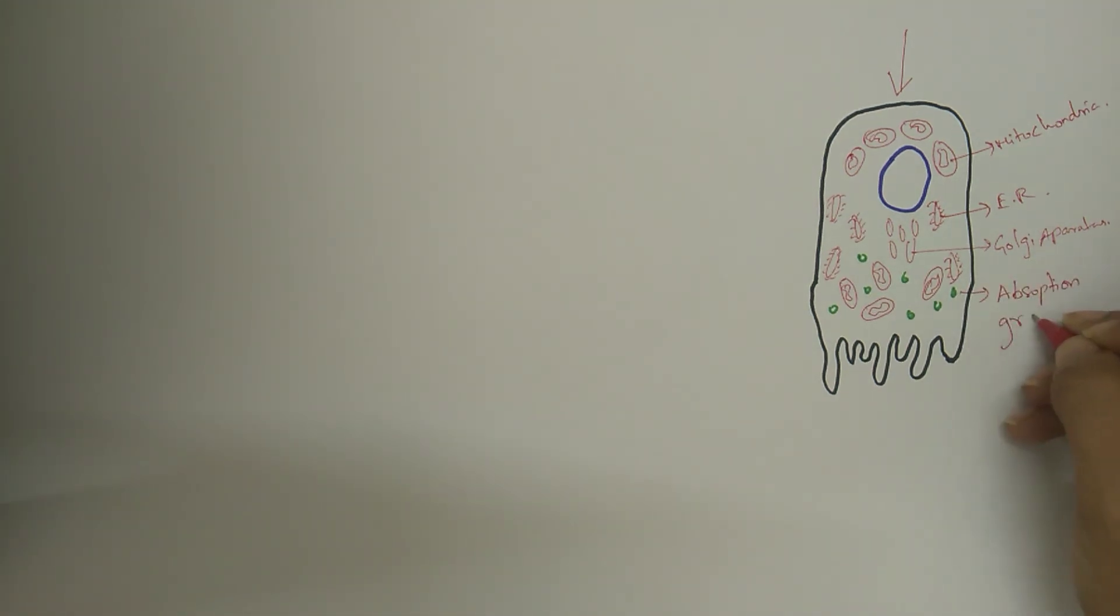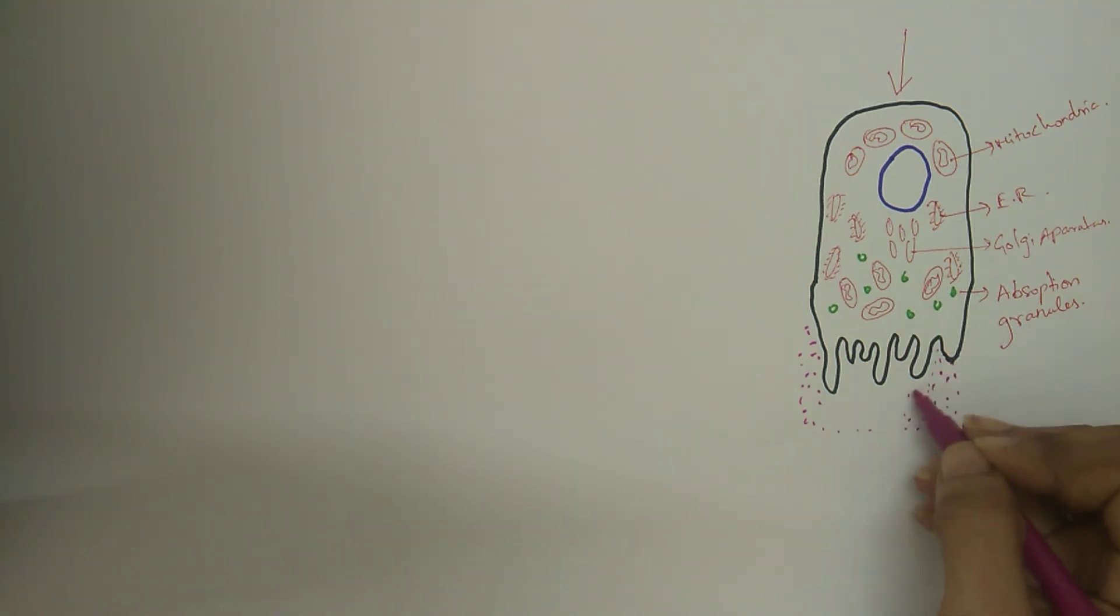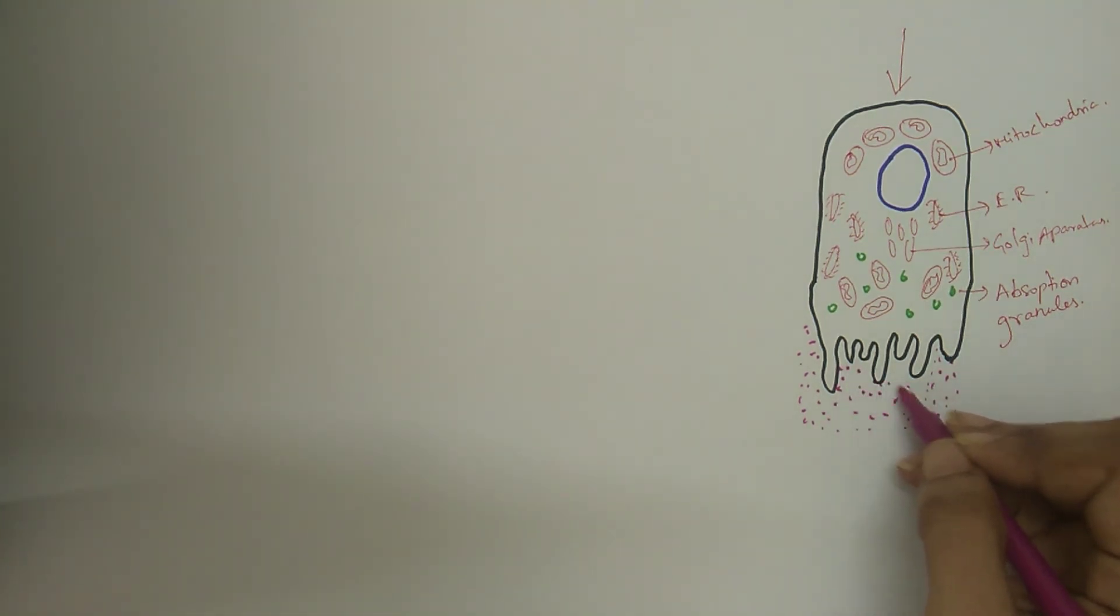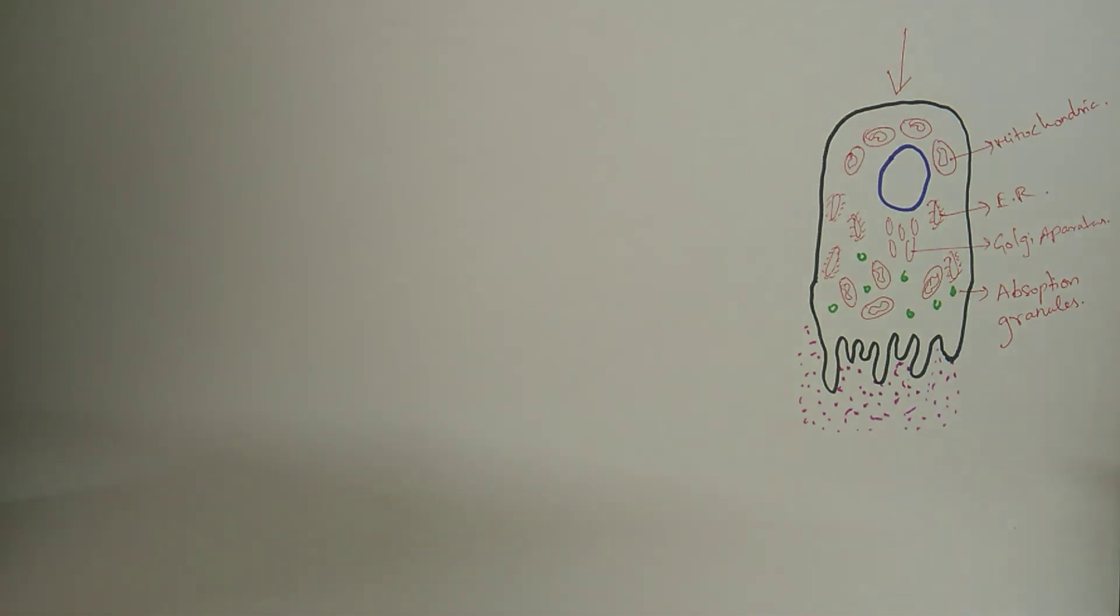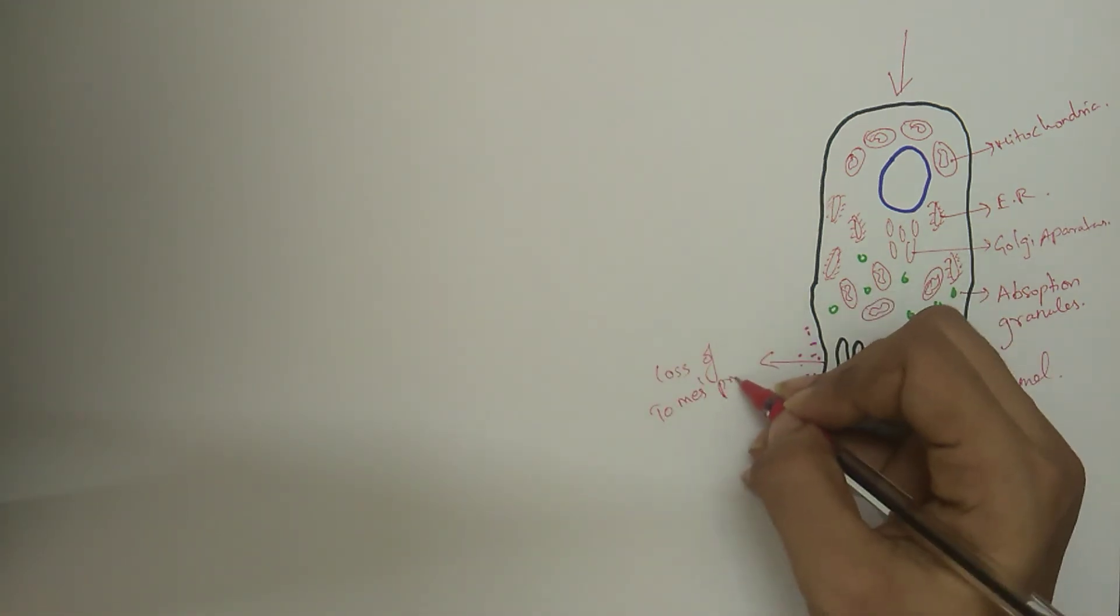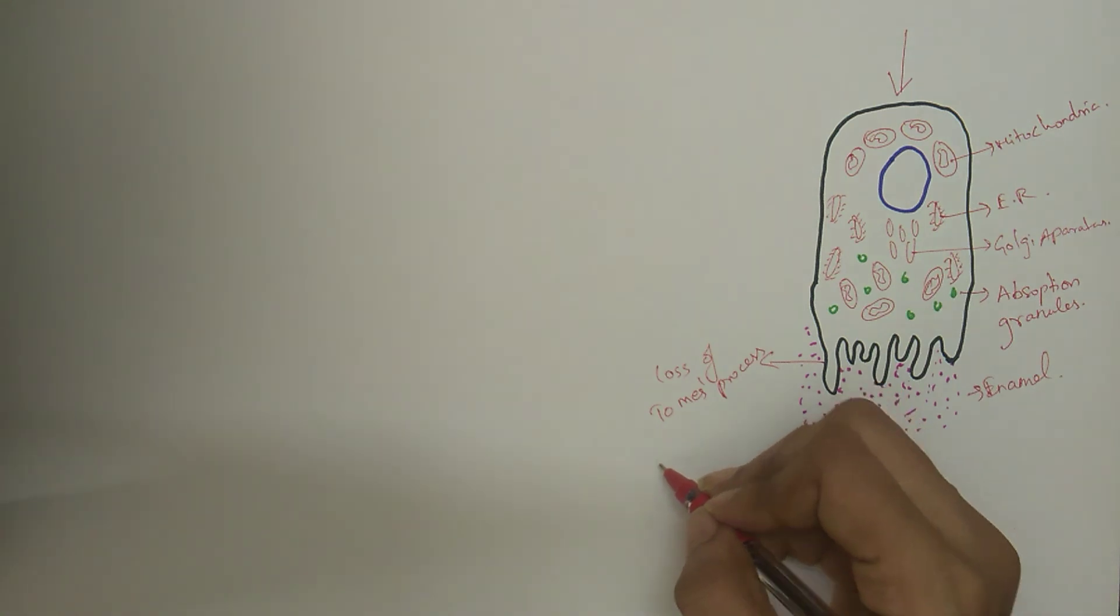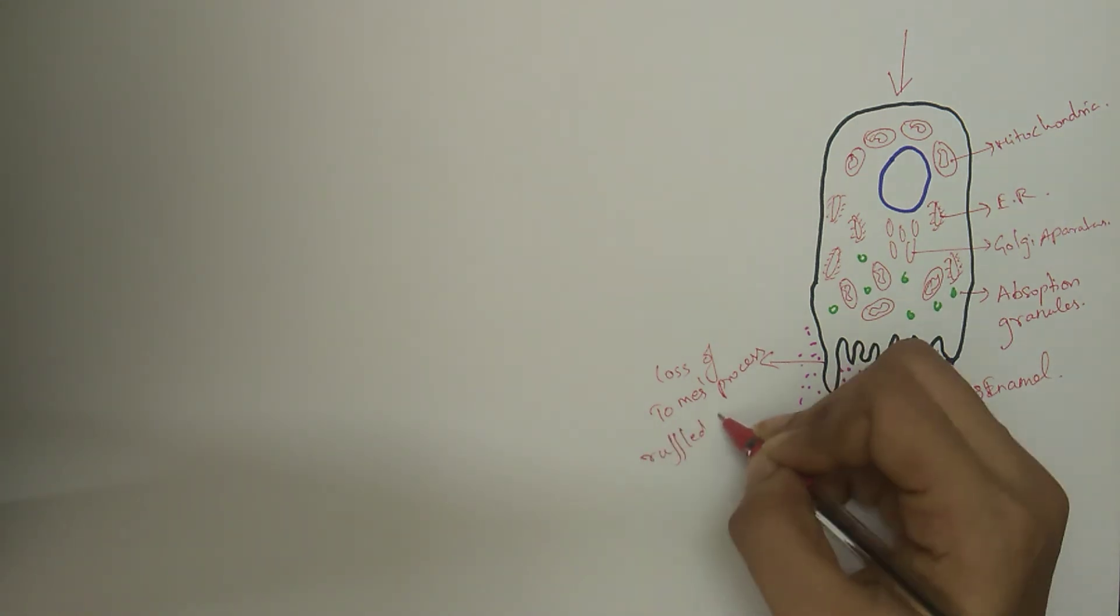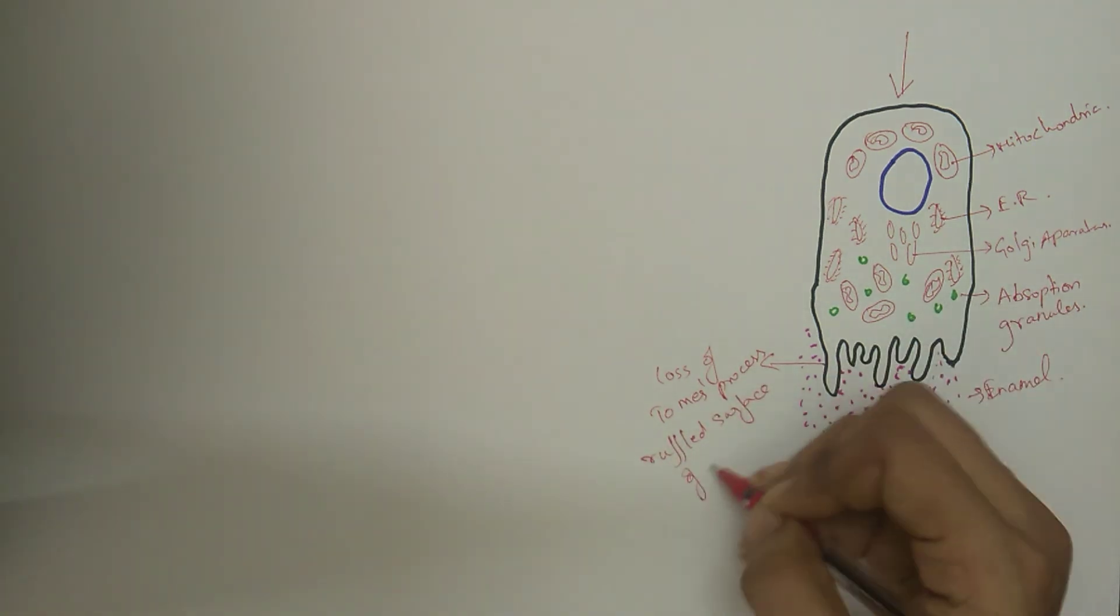The modulation stage: In this stage, the ameloblast removes the organic material from the enamel and adds more inorganic material. The ameloblast cyclically alternates between having a ruffled end or a smooth end. The ruffled end ameloblast allows the incorporation of inorganic material while the smooth end of ameloblast allows the exit of protein, that is organic material, and water.